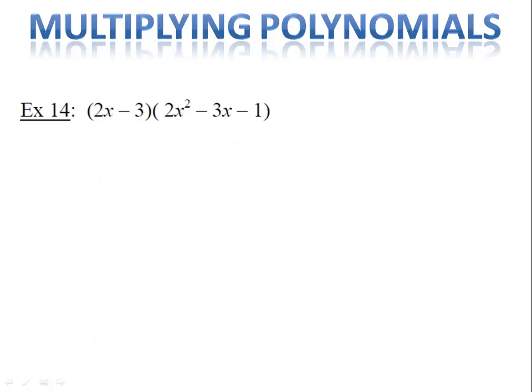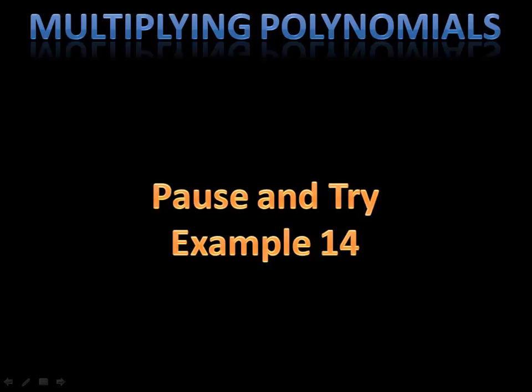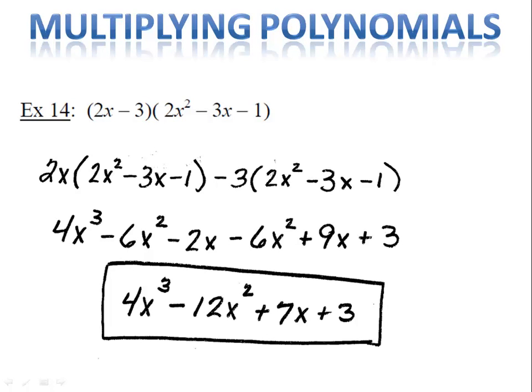Example 14 is for you to try — use example 13 as your guide. Please pause the video and come on back. In example 14, we used the distributive property two times: we distributed the 2x, and then we distributed the minus 3. We did the distributing, combined like terms, and ended up with 4x to the third minus 12x squared plus 7x plus 3.